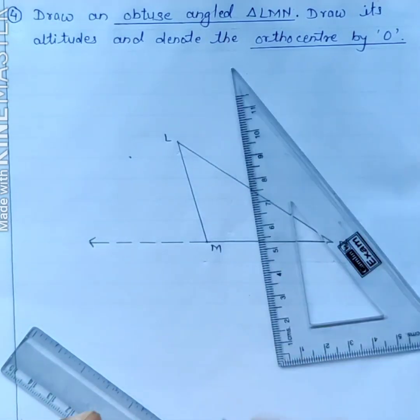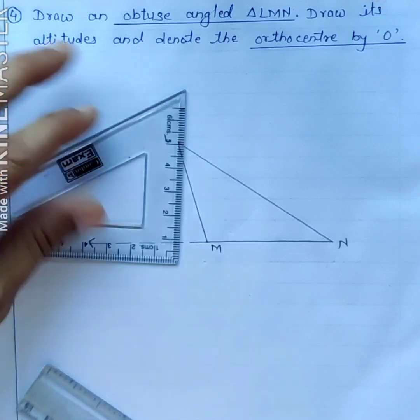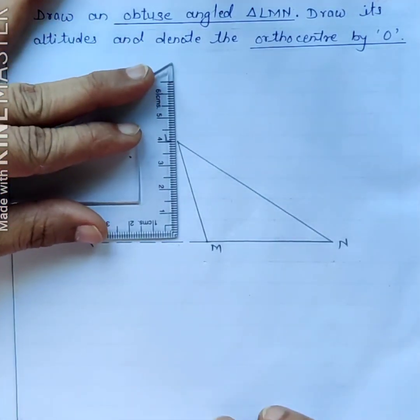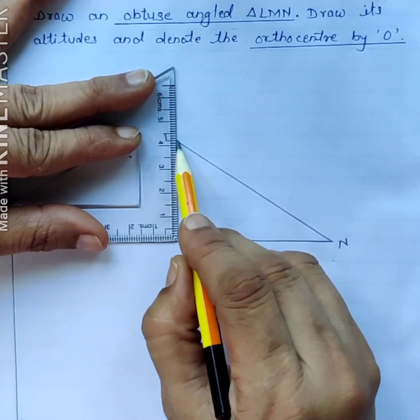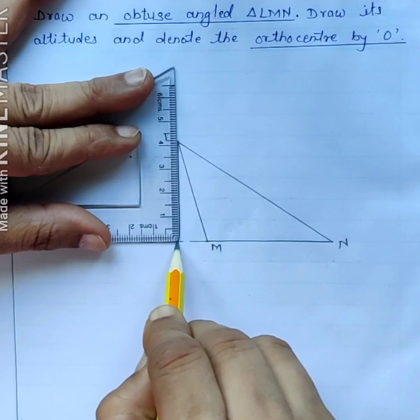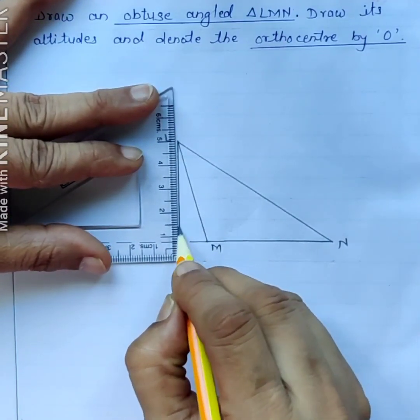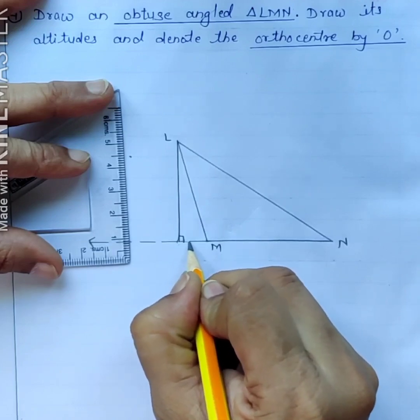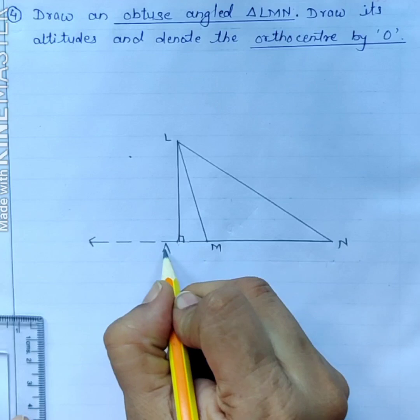Now we will draw perpendicular with the help of this set square. You can use this extended side and draw perpendicular like this. So this is perpendicular. This is point A.